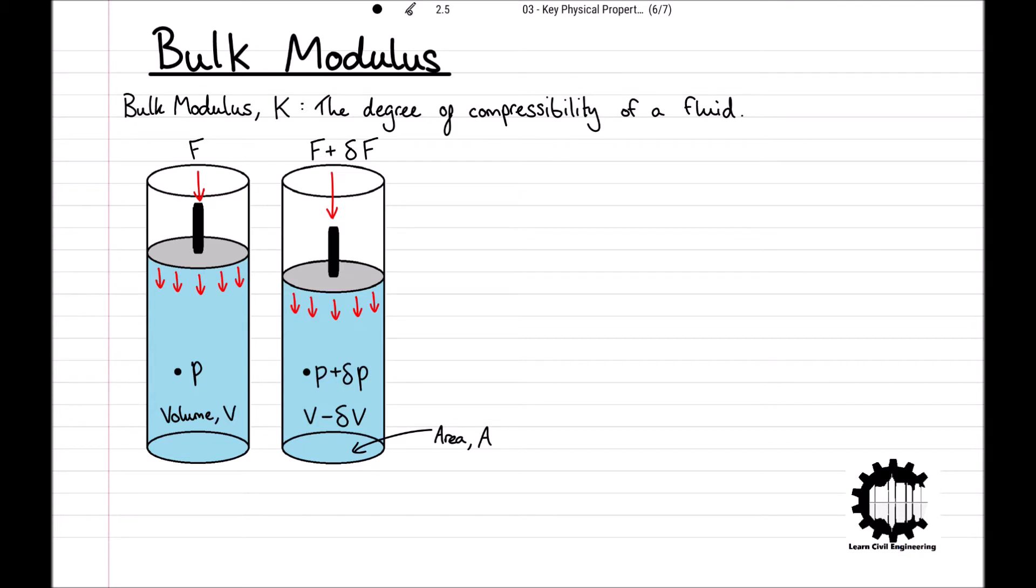Hence, an increase in internal pressure, change in P, is required to reduce the fluid's volume by change in V. The bulk modulus of the fluid can then be defined as K equals V over change in V times by change in P.